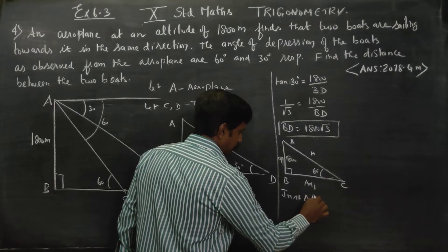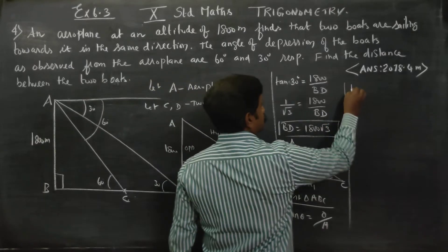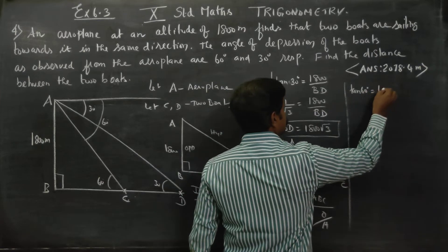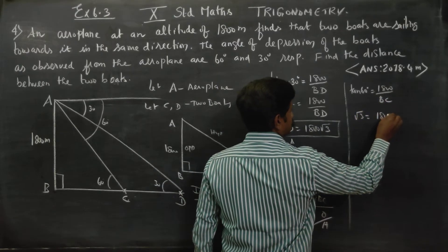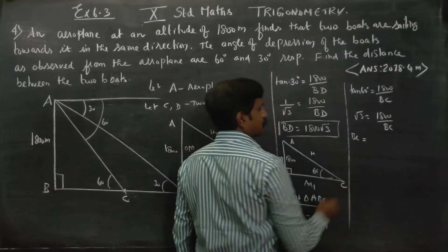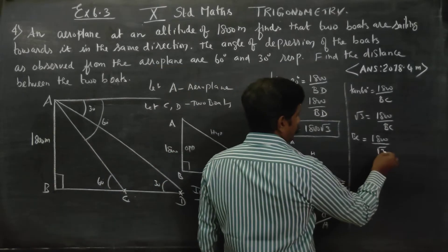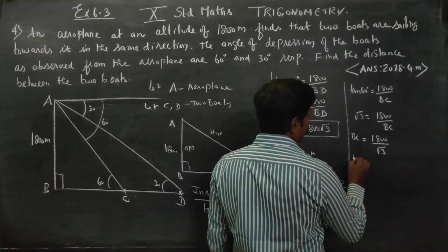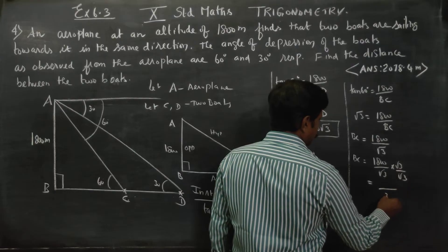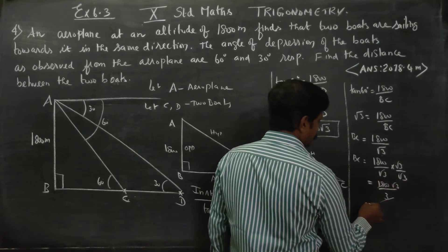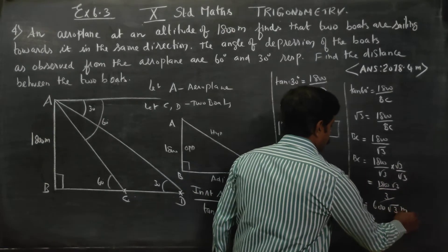In right triangle ABC, the altitude is 1800 and angle of depression is 60 degrees. Using the formula tan theta equals opposite side by adjacent side: tan 60 equals 1800 by BC. Since tan 60 equals root 3, root 3 equals 1800 by BC. Cross multiplying, BC equals 1800 by root 3, which simplifies to 600 root 3.